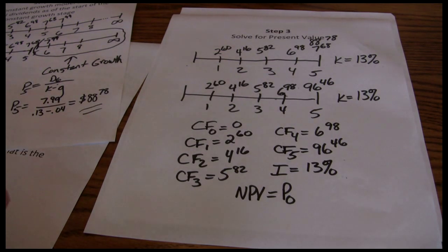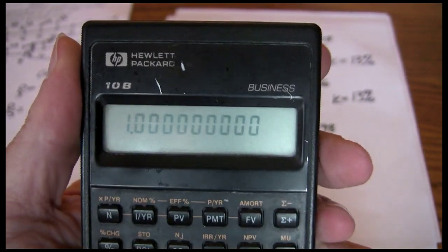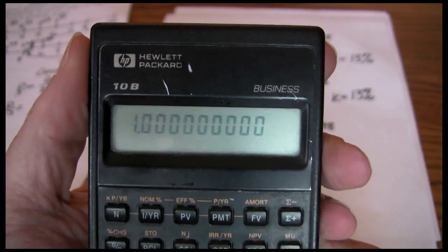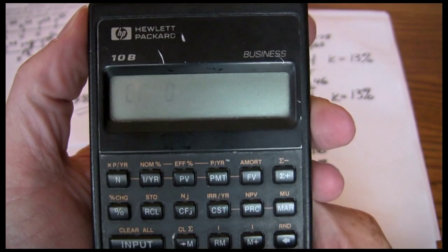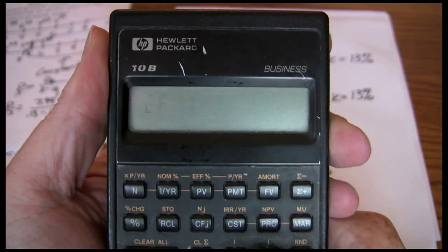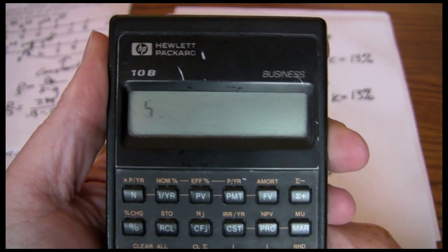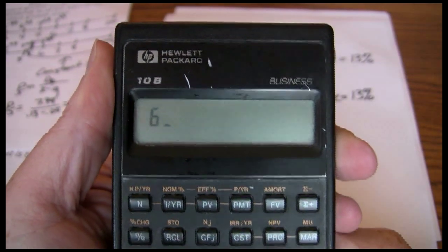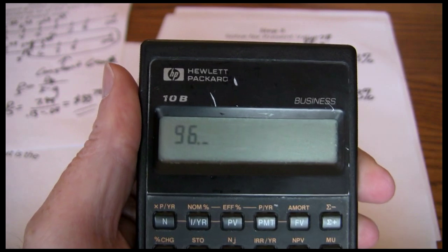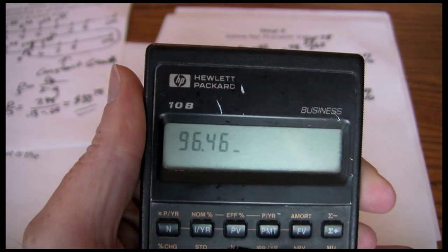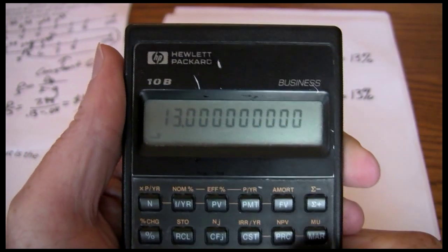I'll do that real quick on my HP-10B. Your process will be a little different if you have a Texas Instruments BA-2 Plus or TI-83 or TI-84. I'll start with zero for CF0, $2.60 for CF1, $4.16 for CF2, $5.82 for CF3, $6.98 for CF4, $96.46 for CF5, 13% for my discount rate, and solve for net present value.